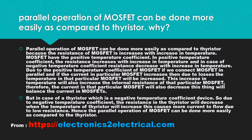But in the case of a thyristor, which is a negative temperature coefficient device, the resistance in the thyristor will decrease when its temperature increases, causing more current to flow due to low resistance. Hence, parallel operation of MOSFET can be done more easily as compared to the thyristor.